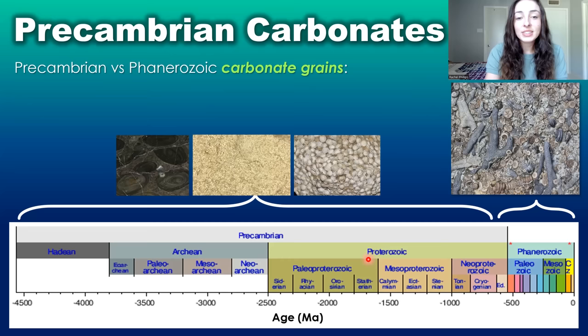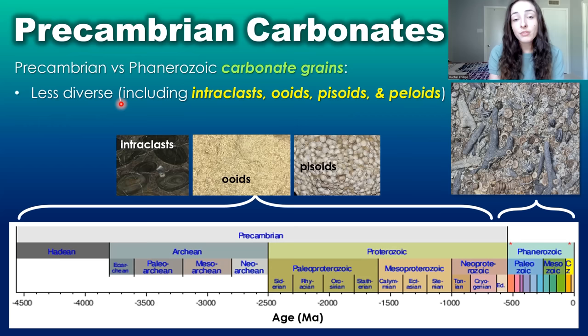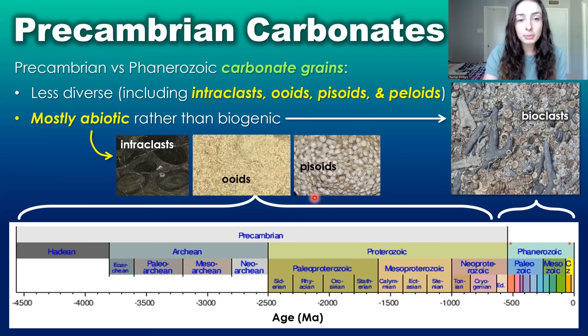The next type of carbonate deposit from the Precambrian is carbonate grains, which exist from the Precambrian through the Phanerozoic — the eon from around 542 million years ago to today. Precambrian carbonate grains were much less diverse than Phanerozoic ones. They included intraclasts, ooids, pezoids, and peloids. The other main difference is that Precambrian carbonate grains were mostly abiotic, whereas those in the Phanerozoic are mostly biogenic.